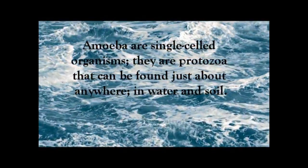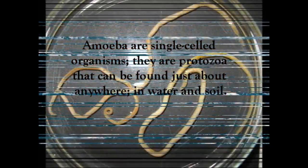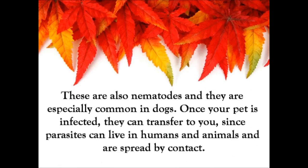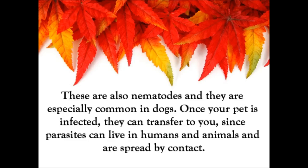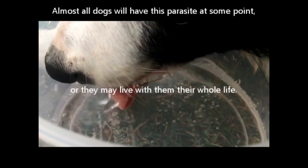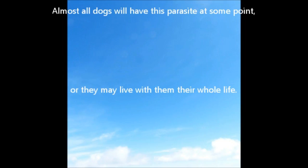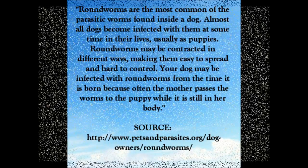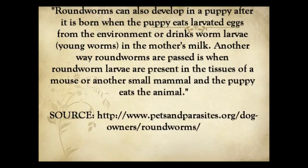Next are roundworms, also known as toxocara worms. These worms are very fond of dogs. Once your pet is infected, they can transfer the worms to you, since parasites live in both humans and animals and are spread by contact. Almost all dogs will have this parasite at some point or may live with them their whole lives. Roundworms are the most common parasitic worms found inside dogs. Some puppies are born with them, as the worms can be passed through breast milk, or when a puppy eats eggs from their environment or eats a contaminated animal such as a small mammal or mouse. Once ingested, the worms can grow inside the puppies or dogs.